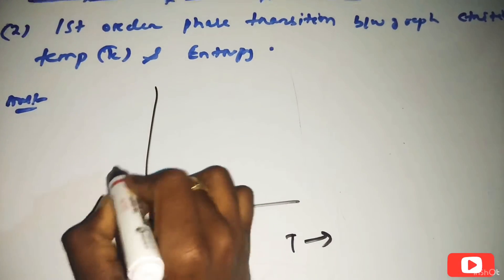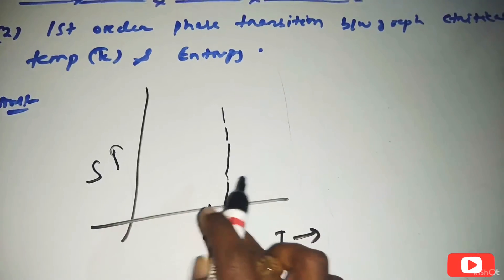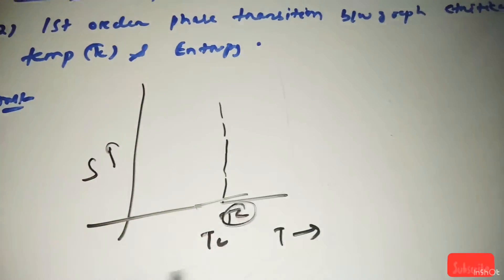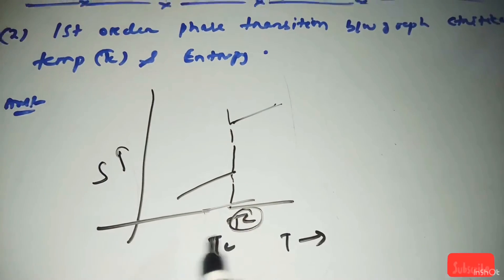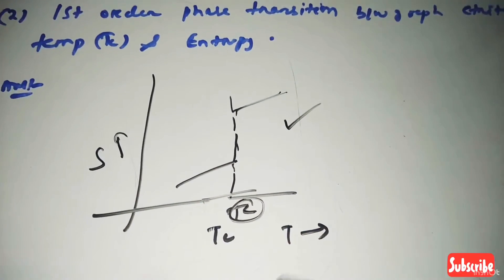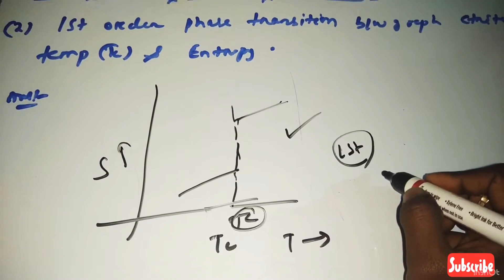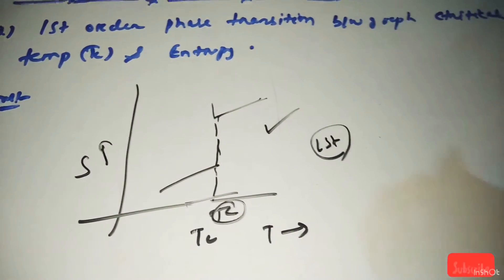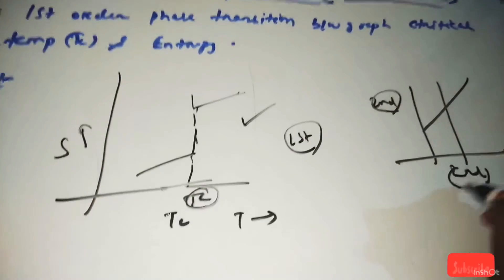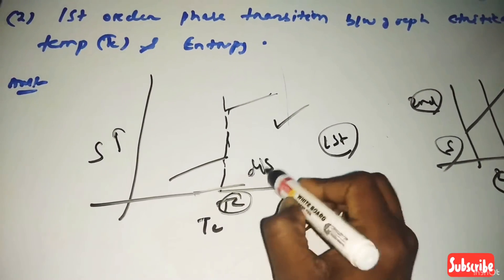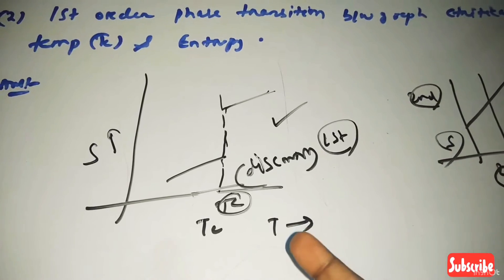Below T_c (critical temperature), entropy S is on the Y-axis. For a second order phase transition, the T vs S graph is continuous. But for a first order phase transition, the graph is discontinuous. So this graph will be a discontinuous type. Mark that option.